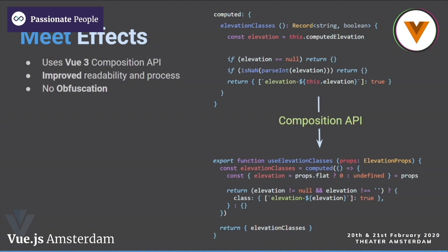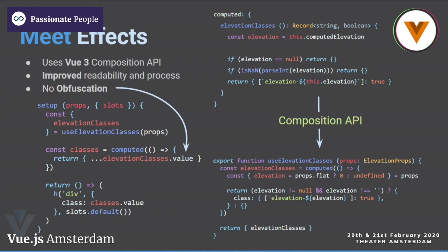Introducing effects — the name may change, the Vue core team may not like it — but it uses the Vue 3 Composition API. We're essentially just moving code over, and in many cases everything just transfers, especially since we use render functions. This allows us to not only improve our TypeScript — one of the big benefits of Vue 3 — but also get rid of all the obfuscation, so users understand where information is coming from and can contribute more efficiently.